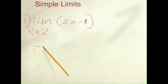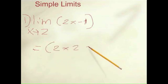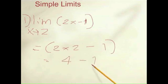So to solve this problem, we just replace the value of x with the limit over here, and that happens to be 2 times 2 minus 1. We know 2 times 2 is 4, and minus 1 equals 3. So this is how you solve this limit.